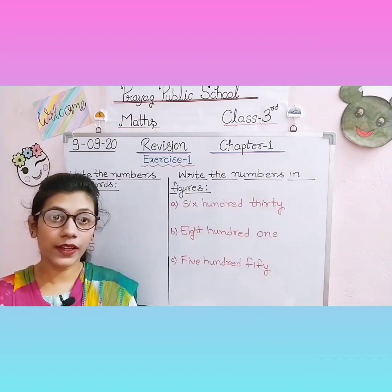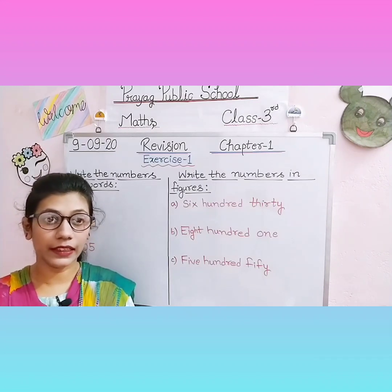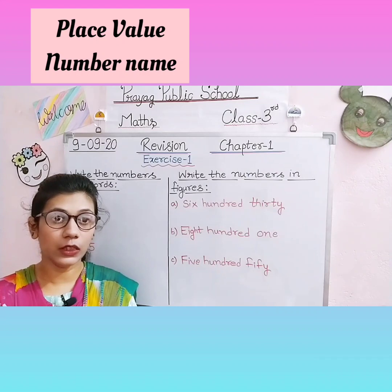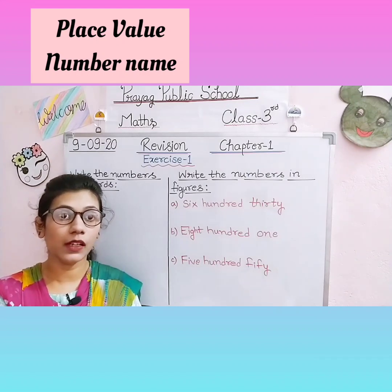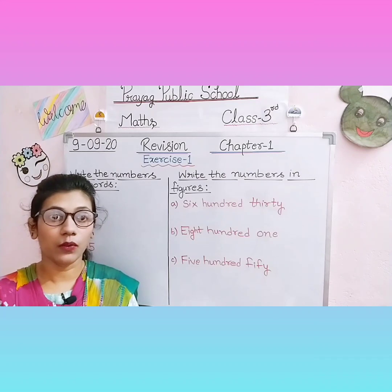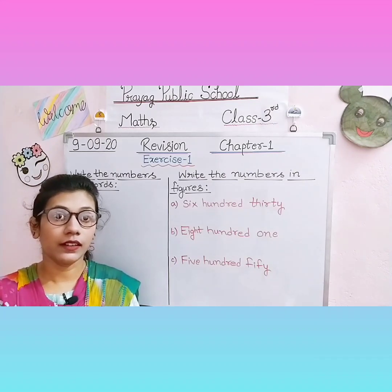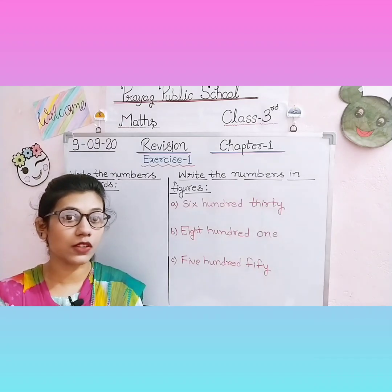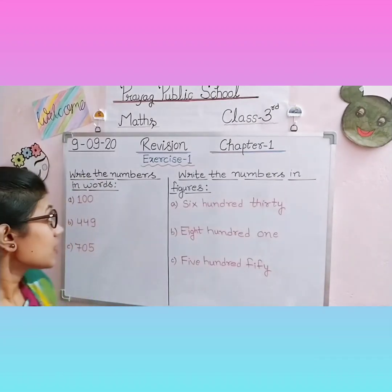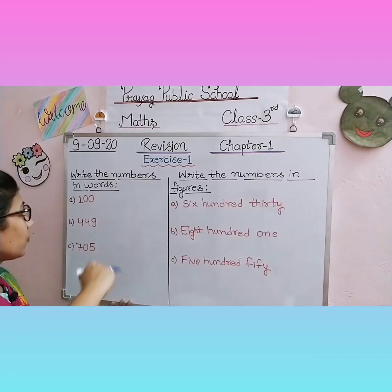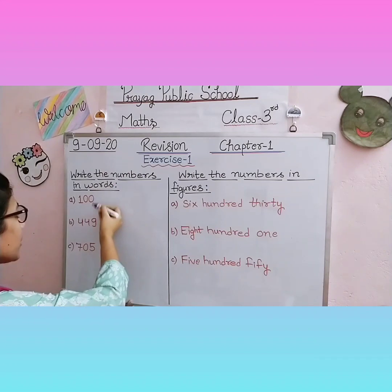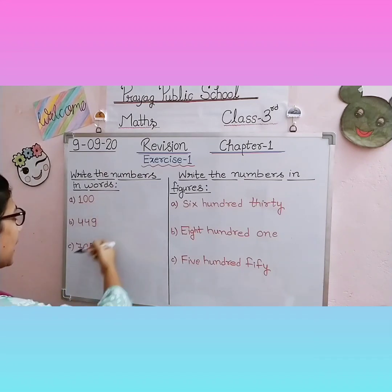Students, to write from figures to words and words to figures, you should know how to count numbers according to their place value, and you should have learned their number names from one to hundred, thousand, and ten thousand. When you know the spellings, you can do these questions easily without mistakes. So now we start. The first type of question is: write the numbers in words. We have to write the given numbers in words.